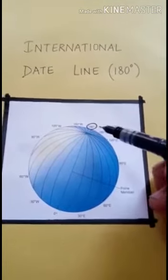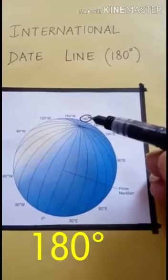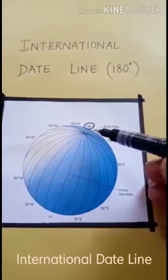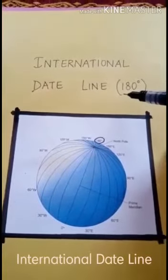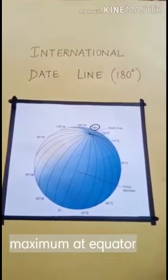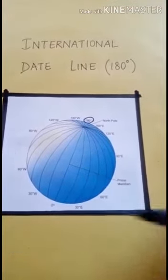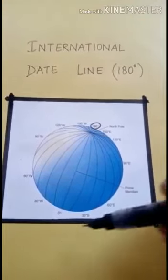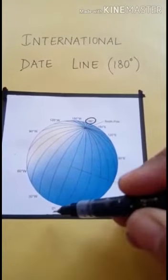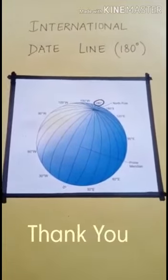180 degree east and 180 degree west is the same longitude, and it is known as only 180 degrees — we don't write east or west. It is named as the International Date Line. The distance between two longitudes is maximum at the equator, and the distance decreases as one moves towards the pole where the longitudes meet. I hope this topic is clear to you now. Thank you.